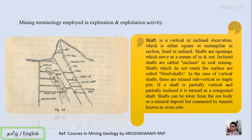A shaft may reach the surface or sometimes may not reach the surface — if it does not reach the surface it is called a blind shaft. From the shaft, tunnels made towards the ore body are called cross cuts.